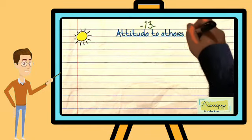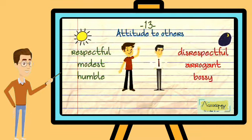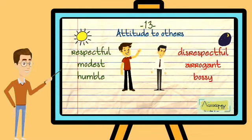In their attitude to other people and in their behavior, in general, people can be respectful, modest or humble. And the opposites are disrespectful, arrogant or bossy. Arrogant people usually look down on other people.